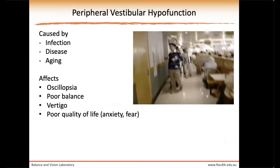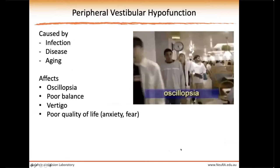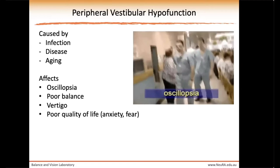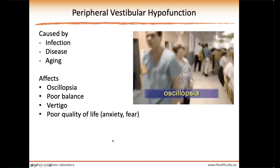The peripheral vestibular system comprises the vestibular organs located in the inner ear, as well as the nerve connecting these organs to the brain. Peripheral vestibular hypofunction is when this system has been affected by inner ear infections like neuritis, other inner ear diseases, or the aging process. The clinical hallmarks include vision instability called oscillopsia, poor balance, vertigo, and can considerably affect one's quality of life.